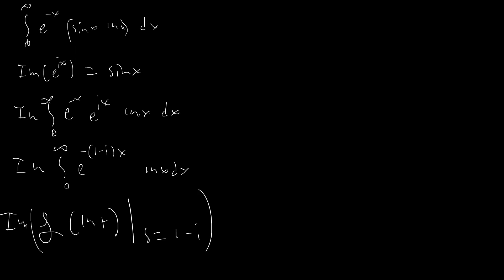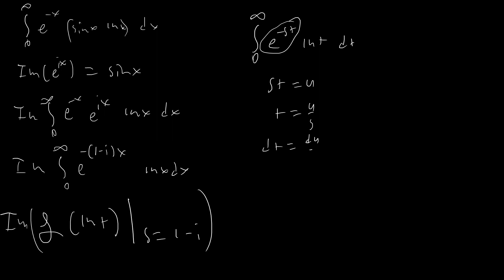So the first thing we have to do is directly use the formula to evaluate the Laplace transform of ln x. In general we're going to have the integral from 0 to infinity of e to the negative st times ln t dt. I want to end up with just e to the negative u, so I'm going to say st equals u, or t equals u over s, dt equals du over s. Assuming s is real, we end up with the integral from 0 to infinity of e to the negative u times ln(u/s), with 1 over s pulled out front, du.